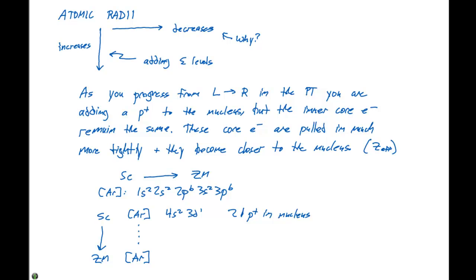As we progress and go over to zinc, the electron configuration is argon, 4s2, 3d10. But there are 30 protons in the nucleus.